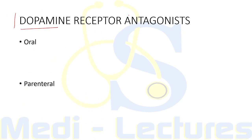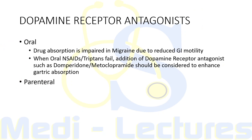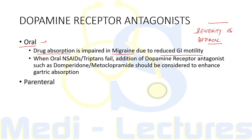Dopamine receptor antagonists are available for oral and parenteral administration. Drug absorption is impaired in migraine due to reduced gastric motility, and this is related to the severity of the attack, not its duration. When oral NSAIDs or oral triptans fail, adding dopamine receptor antagonists like domperidone 10 mg or metoclopramide 10 mg should be considered to enhance gastric absorption.